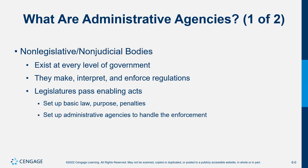Question number one: what part of the government is supposed to make new laws? Do you remember who makes the laws, who enforces them, who judges them? The judicial branch interprets the laws. The legislative branch — Congress, the House of Representatives and the Senate — creates new laws.